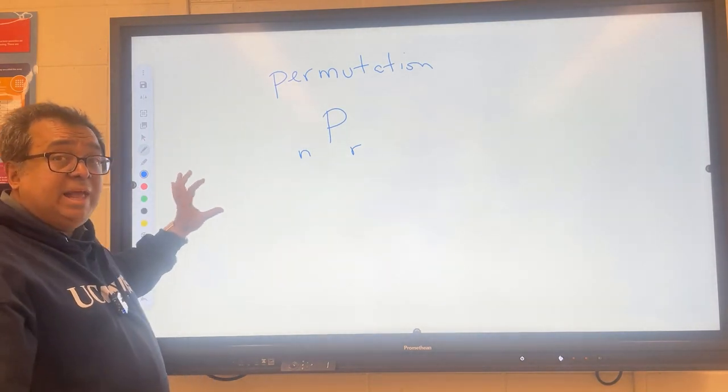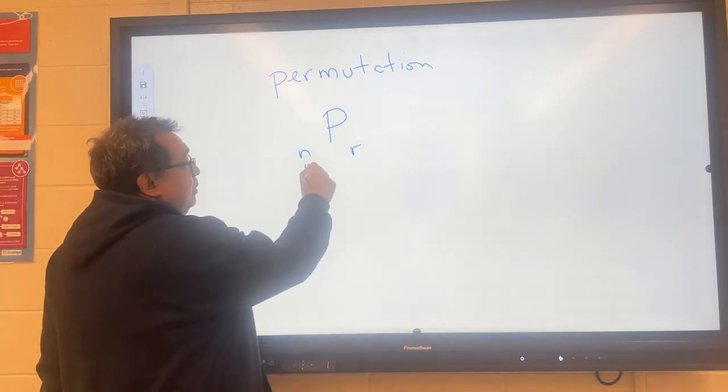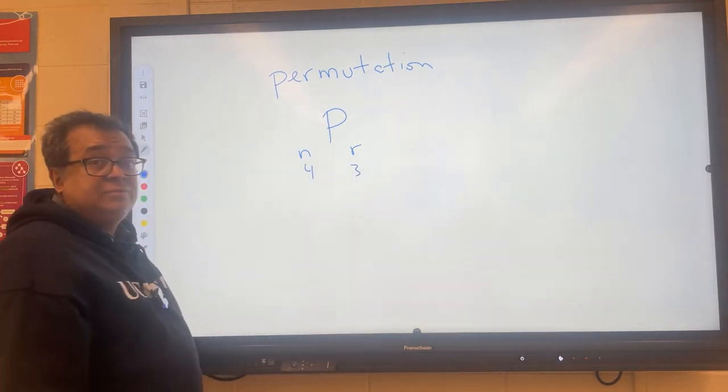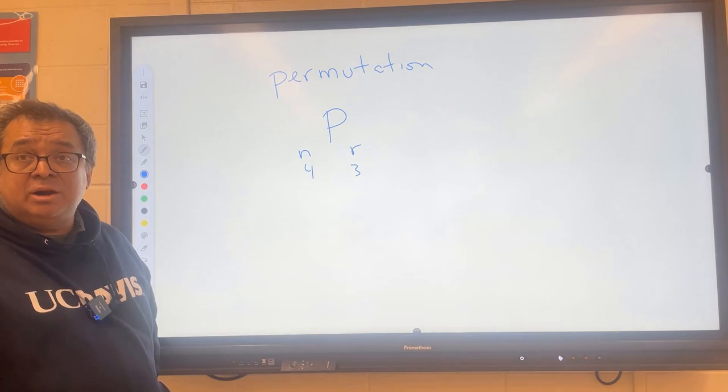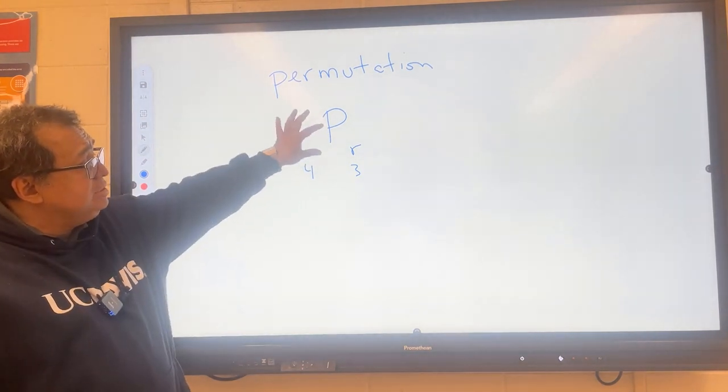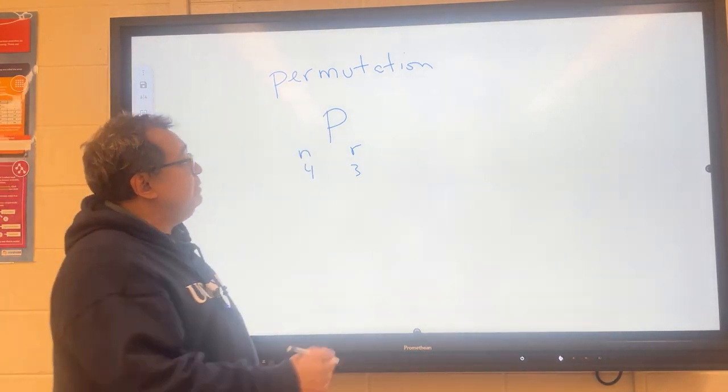Okay? And in the example that I gave, we had four horses, and we were picking out three of the horses for our results in our race. Now, I should tell you that this nomenclature here is sometimes written like this,